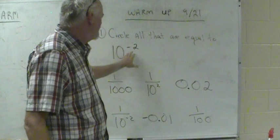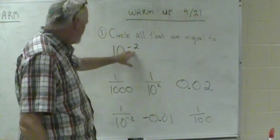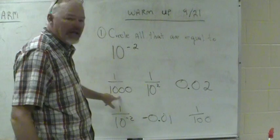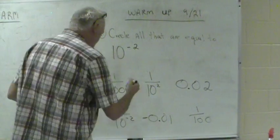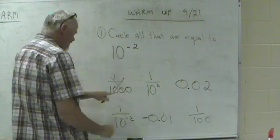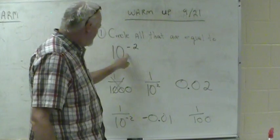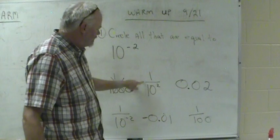Today's warm-up, Monday. Circle all that are equal to this number, 10 to the negative 2. All right, first one is the fraction. Well, I know it's got to have two zeros in it. That one's got three, this is no good. It's got three zeros in it, it is no good.